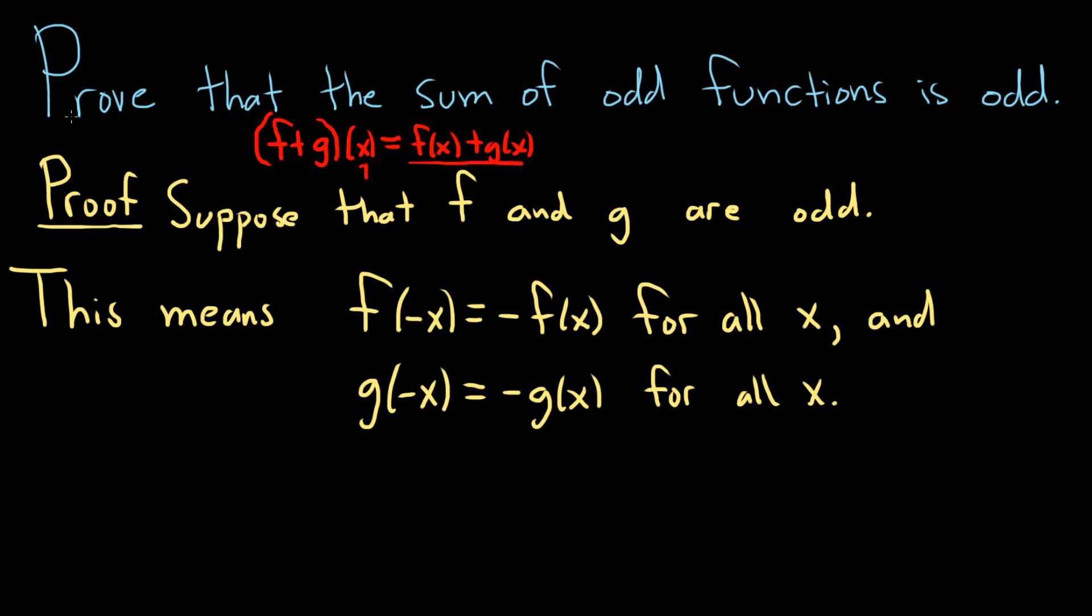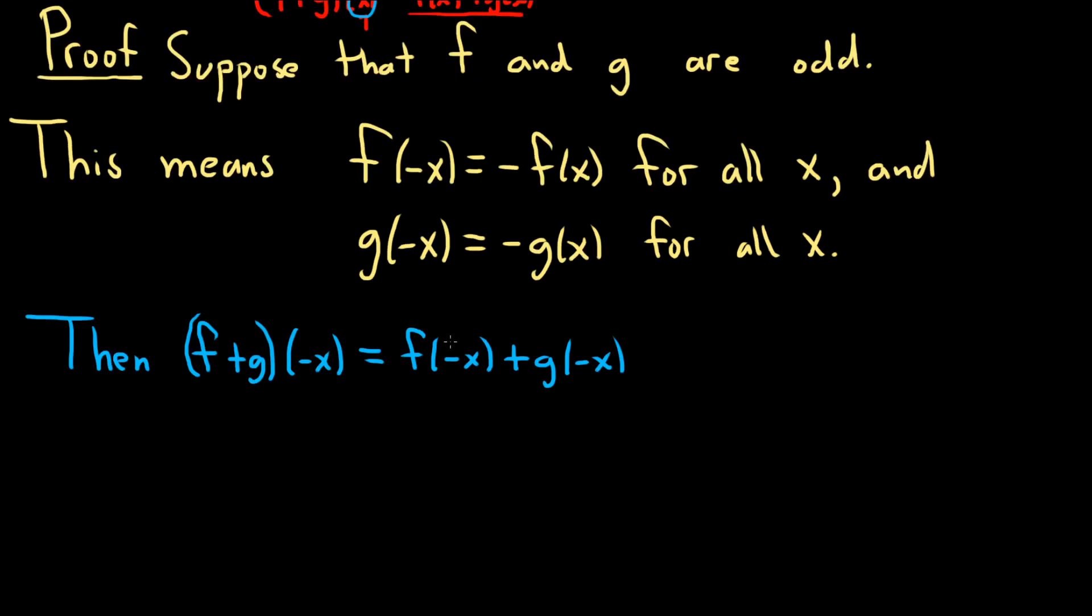We have to take this and plug in negative x and verify that it's also odd. So (f+g)(-x) equals, by the definition of the sum, f(-x) + g(-x). But f(-x) = -f(x) because f is odd, and likewise g(-x) = -g(x) because g is odd. So (f+g)(-x) = -f(x) + (-g(x)) because f and g are odd.